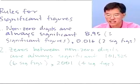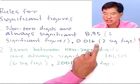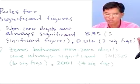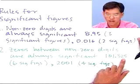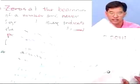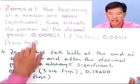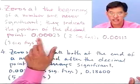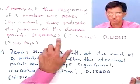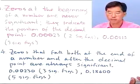When we talk about significant figures, we're asking which numbers are really counting in our expression and which ones are just placeholders. First, all non-zero digits are always significant — so 8.95 has three significant figures, and 0.016 has two significant figures (which I'll often call sig figs). Second, zeros between non-zero digits are always significant — 101.325 has six significant figures, and 2001 has four significant figures. Third, zeros at the beginning of a number are never significant; they indicate the position of the decimal point. So 0.003 has one significant figure, and 0.00113 has three significant figures.